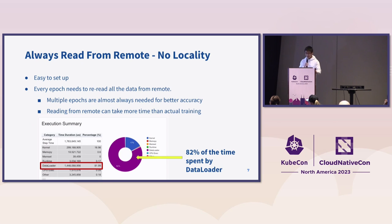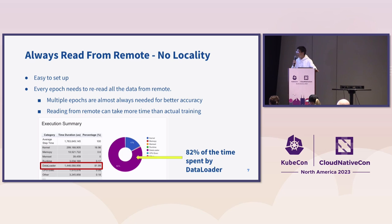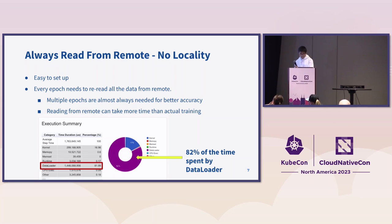If we always read data from remote storage, there will be no data locality. This is the easiest way to set up, but every epoch of training needs to read all the data from remote. Multiple epochs are always needed for better accuracy, and reading from remote can take more time than the actual training. We did a test — a PyTorch training on a subset of ImageNet — and you can see 82% of the time is actually spent by the data loader instead of the actual training. The data was on S3.